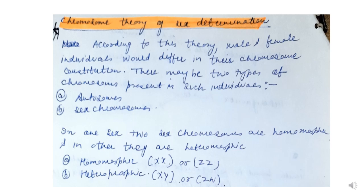In one sex, the two sex chromosomes are homomorphic, which means that both sex chromosomes will be of the same type, and in the other sex they will be heteromorphic, meaning the two sex chromosomes will be of different types. In homomorphic sex the chromosomes are XX or ZZ, and in heteromorphic sex they can be XY or ZW.